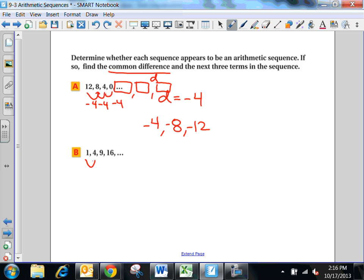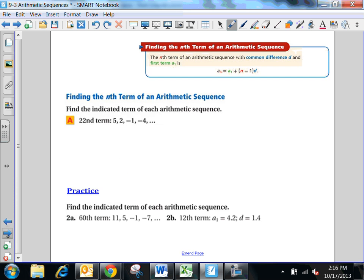The next sequence, I look at the difference. What's the difference here? Adding 3, adding 5, adding, what is that adding? That is adding 7. So that one is not common. That's not an arithmetic sequence. So I would just say, no, it's not arithmetic. It's actually quadratic. It's squaring successive terms each time.